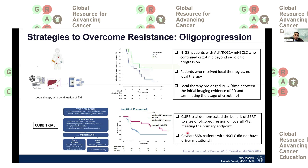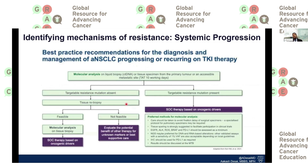One caveat: this trial had about 86% of patients without any driver mutations, so only 14% of patients are directly relevant to the oncogene-driven subset. But there is emerging data, and in clinical practice I have seen many physicians use that strategy — locally targeting oligoprogressive sites while continuing frontline therapy, especially if the tumors have had a good response for a particular oncogene-driver.